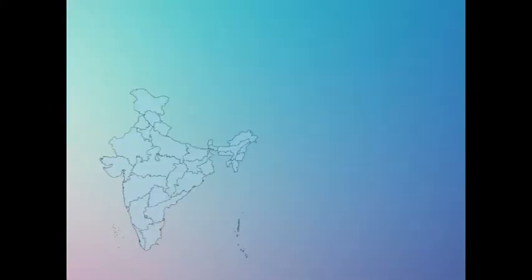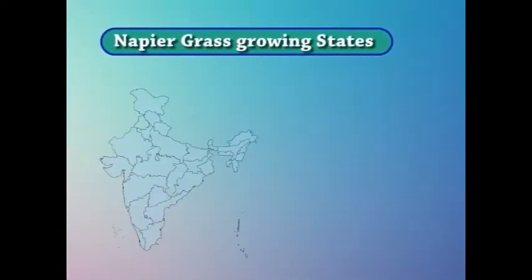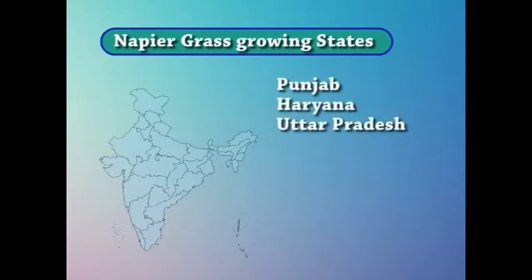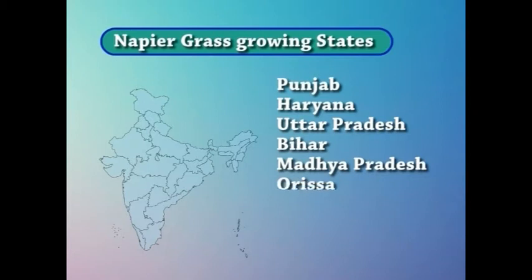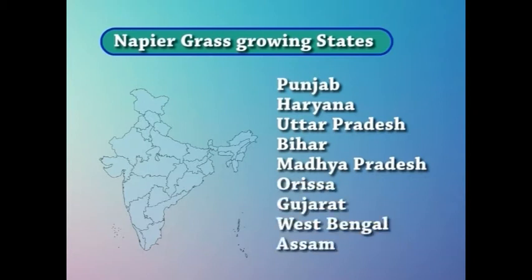It was introduced to India in the year 1912 from South Africa. In India, it is grown mainly in Punjab, Haryana, Uttar Pradesh, Bihar, Madhya Pradesh, Orissa, Gujarat, West Bengal, and Assam.